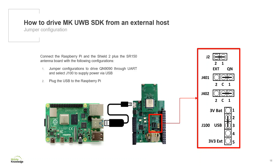To communicate the TLVs between the Raspberry Pi and the MKShield 2, a micro-USB cable will be used. Simply connect the USB end to the Raspberry Pi and the micro-USB end to the MKShield 2.